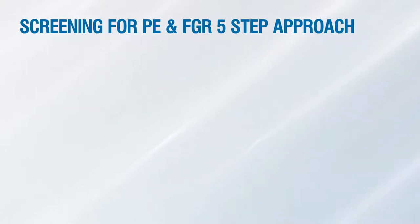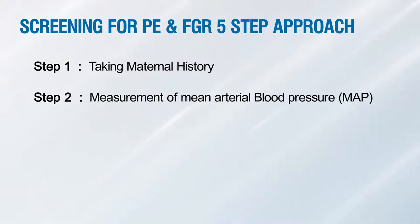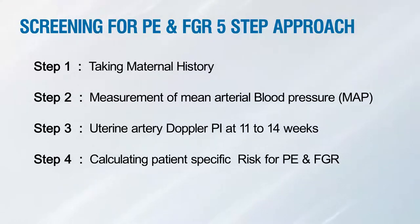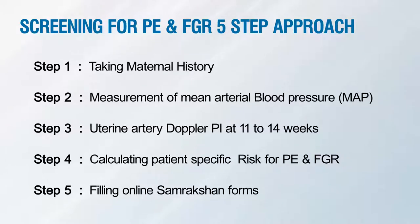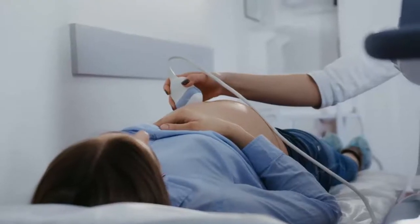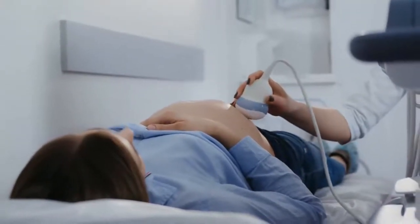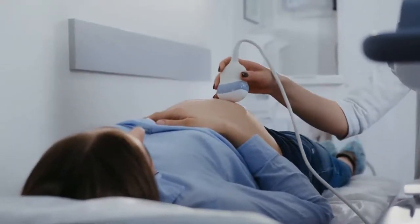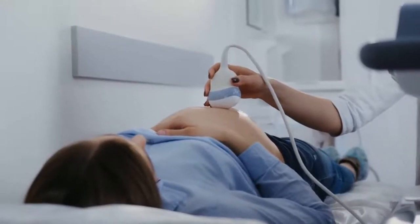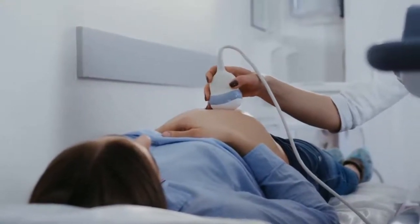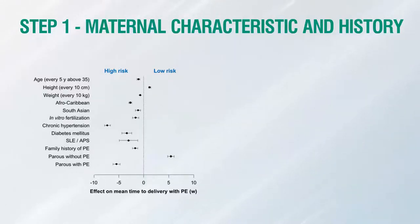Under Samrakshan, screening for preeclampsia is a five-step approach based on FMF guidelines: maternal history, mean arterial pressure, uterine artery Doppler, calculating patient-specific risk for preeclampsia and FGR, and the fifth step is filling the online Samrakshan forms to gather India-specific data. Maternal serum biochemistry tests are not included under Samrakshan, but are recommended if affordable. As a radiologist, you only need to take the uterine artery PI, which takes no more than 50 seconds.